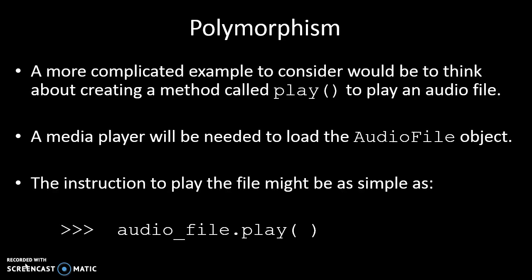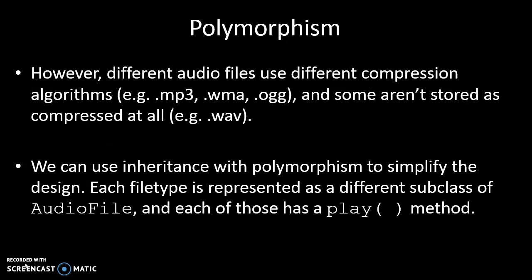If we wanted to look at a more complex example, we could think about playing an audio music file. If we had a method called play, the instruction could be as simple as audio_file.play(). But the problem is different audio files have to be played differently — MP3, WMA, and OGG files are compressed using different compression algorithms, and some aren't compressed at all, like WAV files. So the player needs to know how to decompress if compressed, and not to decompress if it isn't. Ideally we'd always use the play method, but for the program to know to play it in the appropriate way given the audio file type.